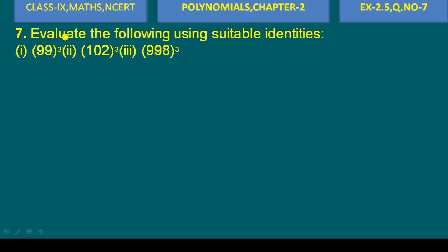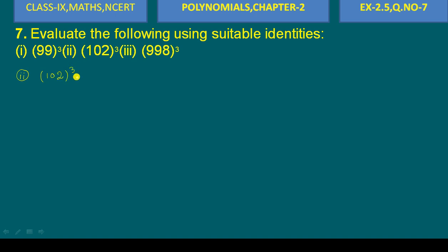Question number 7: evaluate the following using suitable identities. In question number 2, we have 102 to the power cube — that is 102³.